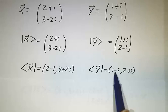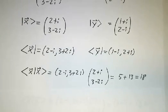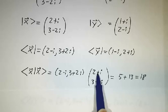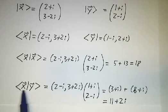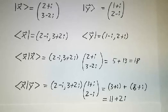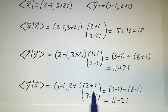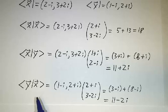Likewise, the bra for y is 1+i and 2−i, written as a row with everything conjugated. If you take the inner product of x with itself, you multiply the bra times the ket: (2−i)(2+i) = 5, and (3+2i)(3−2i) = 13, giving 18. For the inner product of x with y, you get 11+2i. For the inner product of y with x, you take the bra for y times the ket for x and get 11−2i. These two are complex conjugates of each other, which is the symmetry property — reversing the two entries conjugates the answer.